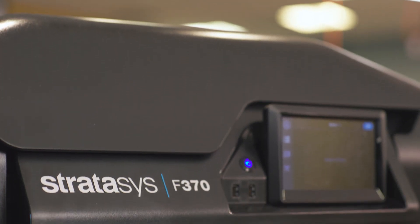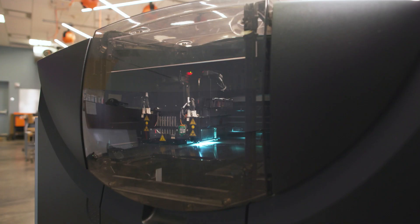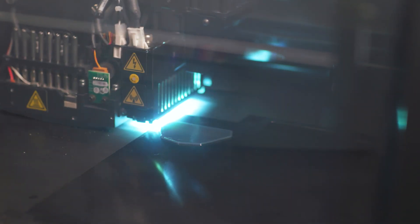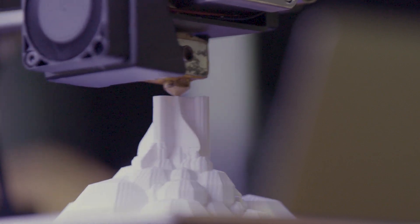That includes two FDM or fusion deposition modeling printers that use ABS plastic filament. This technology lets students print things they can't make any other way.